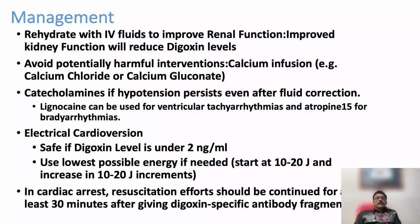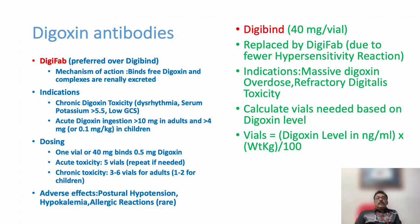Resuscitation efforts should be continued for a long time in Digoxin toxicity. There are two important antidotes: Digifab and Digibind. Digifab is preferable. The mechanism of action is that it binds free Digoxin and the complexes are renally excreted; if the patient has renal failure, dialysis may be needed. Indications include chronic Digoxin toxicity with dysarrhythmia, serum potassium greater than 5.5, low GCS, or acute Digoxin ingestion of more than 10 mg in adults and more than 4 mg in children. One vial (40 mg) binds 0.5 mg of Digoxin; acute toxicity may require 5 to 10 vials.